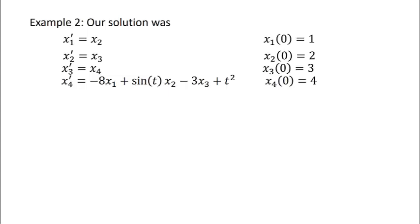Our second example from the previous video, our solution, x1 prime was x2, x2 prime was x3, x3 prime was x4, x4 prime was minus x1 plus sin of t x2 minus 3 x3 plus t squared. And we had initial values as well.